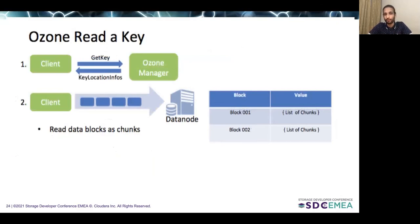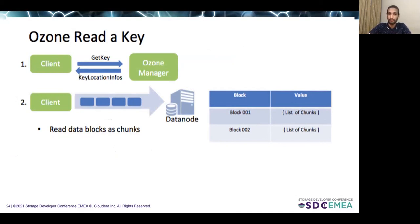For reading a key, the client makes a get key call to Ozone Manager, and Ozone Manager returns a list of key location info to the client. The key location info is a list of blocks which comprise the key. Each block corresponds to a container, and every container is present in a set of data nodes in Ozone. For reading a block, the client issues a read request to the set of data nodes which contain that block, and it can read the block from any data node containing the block.